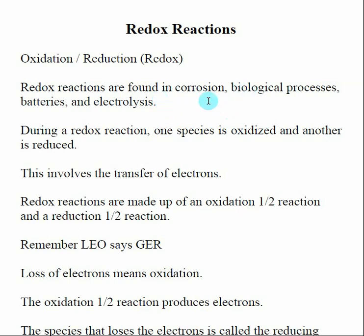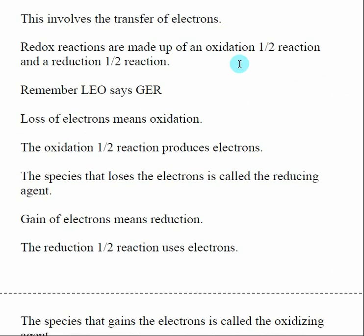In a redox reaction, there are two species: one is going to be oxidized and another is going to be reduced. The key thing to remember is that during redox reactions there's a transfer of electrons, and we can grab onto those electrons and do things with them — like light up a battery or turn over your car. A redox reaction is made up of two half reactions: one half is an oxidation and the other half is a reduction, and when we combine those two we get the overall redox reaction.